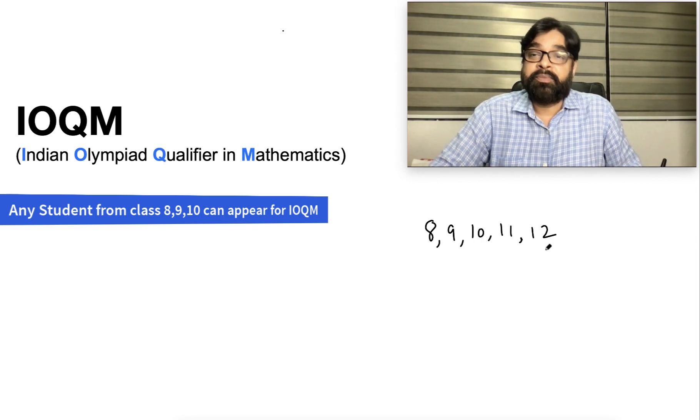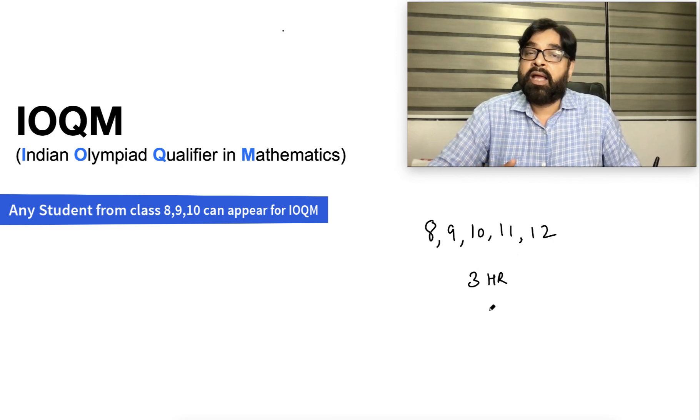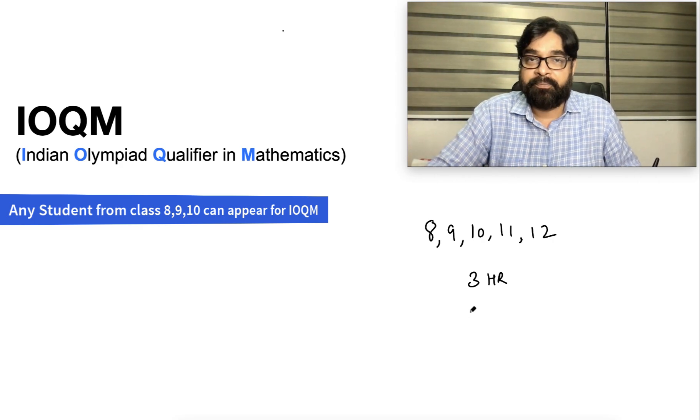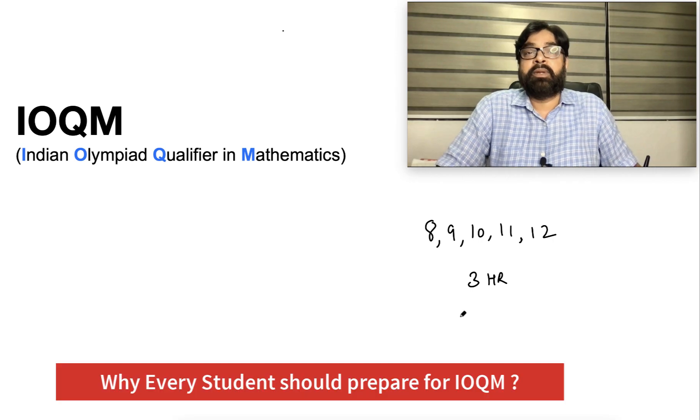All having the same paper and that is the first stage of qualifying. It is a three hour paper and it is having only answer as a numeric answer, means like from 0 to 99. That is the examination pattern used to be there and it is a very simple examination.